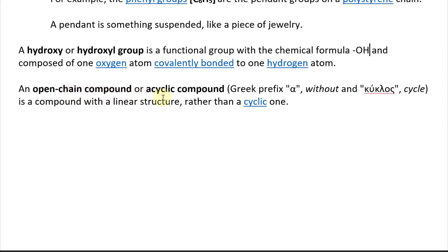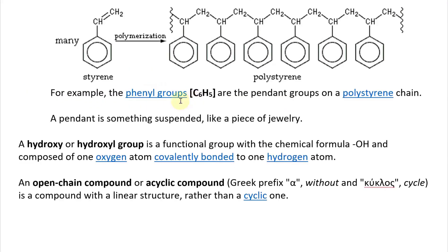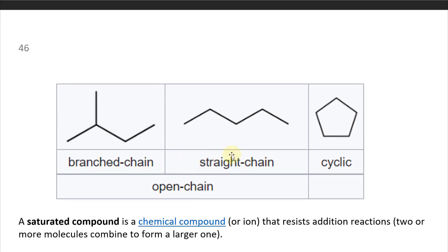An open chain compound, or acyclic compound — with the Greek prefix 'a' meaning without, and 'cyclic' meaning cycle, so without cycle — is a compound with a linear structure rather than a cyclic one. So basically a non-cyclic compound. Here is a branched chain and a straight chain, both of which are acyclic.